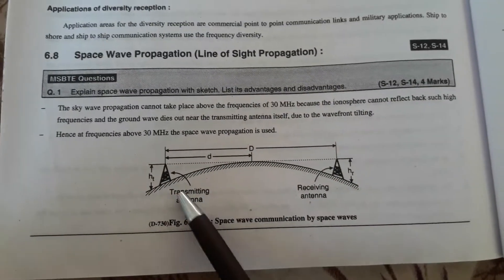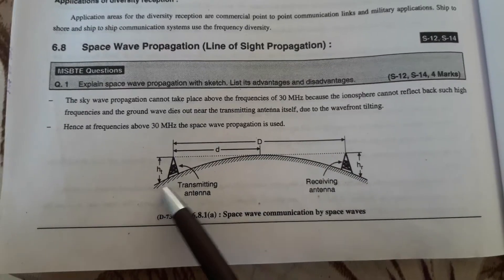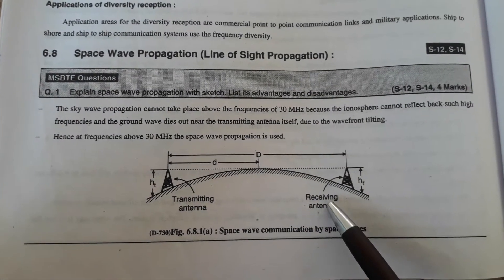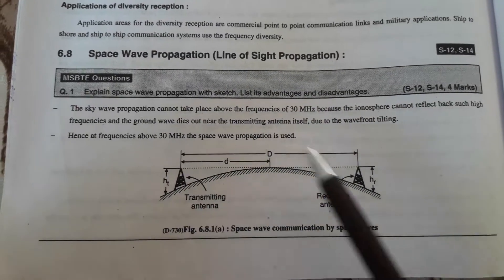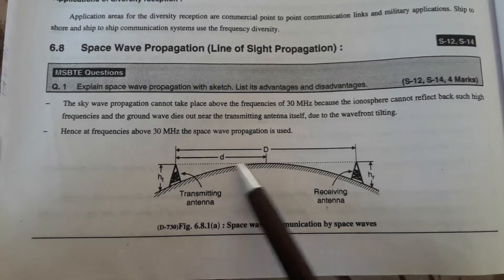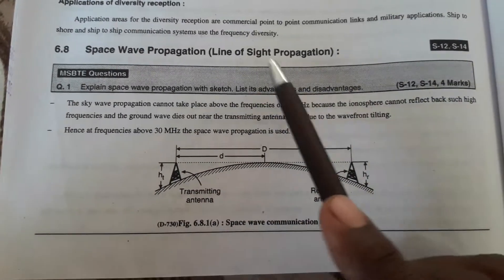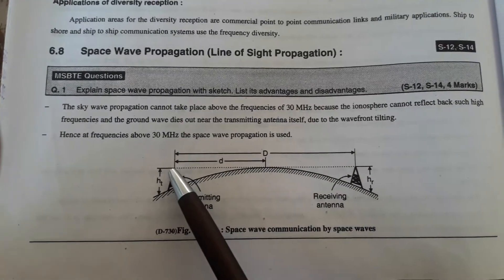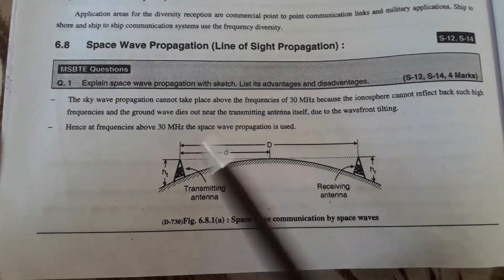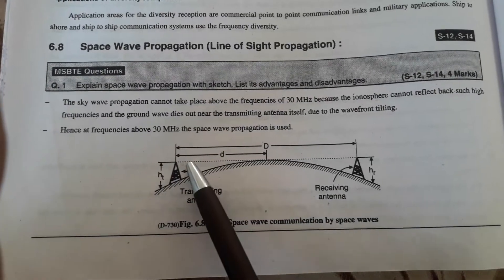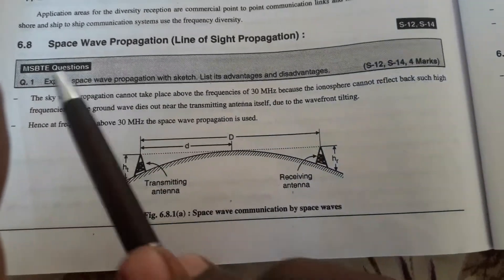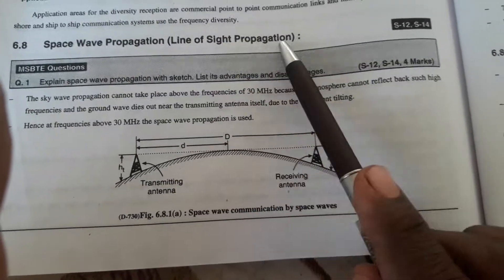Here you are observing the diagram of space wave communication. Suppose this is your earth's surface. This is your transmitting antenna and this is your receiving antenna. Whatever signal we want to send from transmitter to receiver, it will be sent through a straight line. That's why such communication is also called as line of sight propagation, because there is no reflection of the signal from any surface — not from the ionosphere or anything. The signal transmitted by the transmitting antenna is sent to the receiving antenna in a straight line.